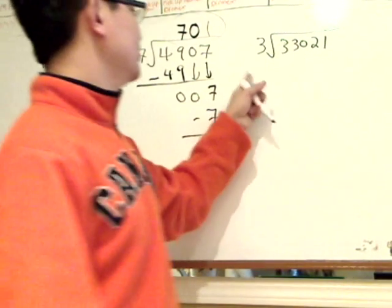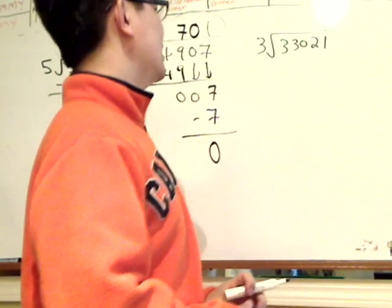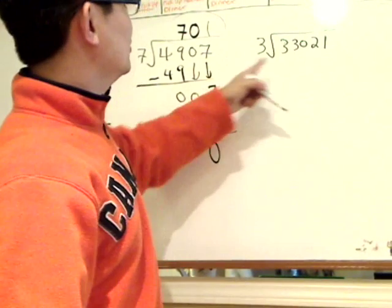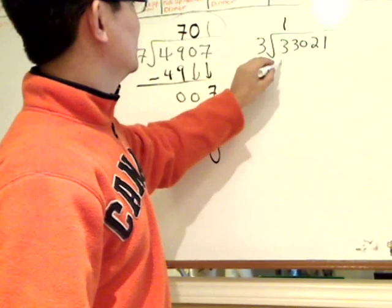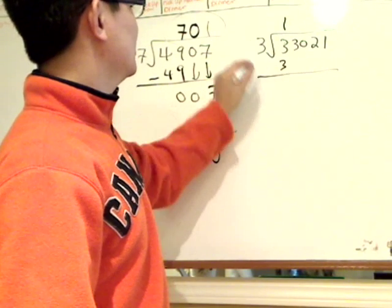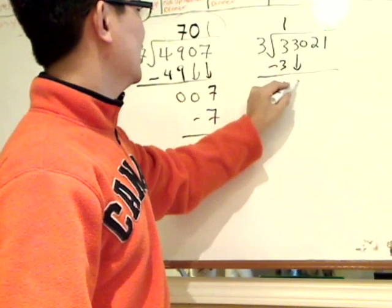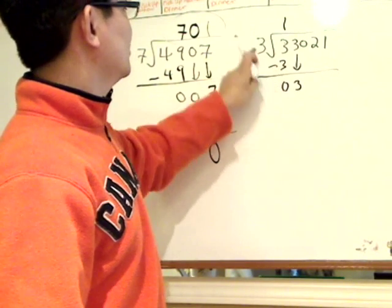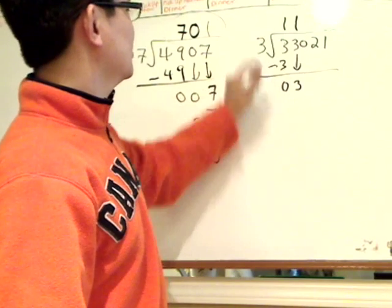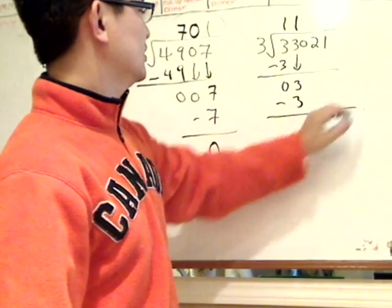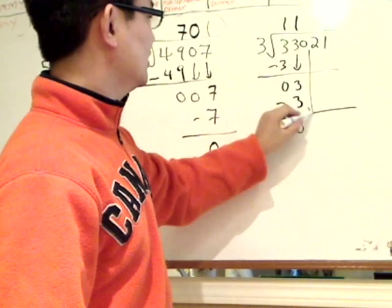Then the last number, 3 goes into 33,021. So 3 go into 3 once. 1 times 3 is 3. 3 minus 3 is 0. Bring down 3 again. 3 going into 3 once. 1 times 3 is 3. Subtract. The difference is 0. Bring down the 0.